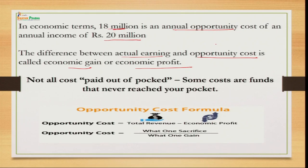In this case, if the firm earns 20 million from the first alternative and the opportunity cost was 18 million, then 2 million is their economic gain. But if they earn less than 20 million, they may be in economic loss. This principle helps you understand that you need to focus not only on accounting profit but on economic profit as well.